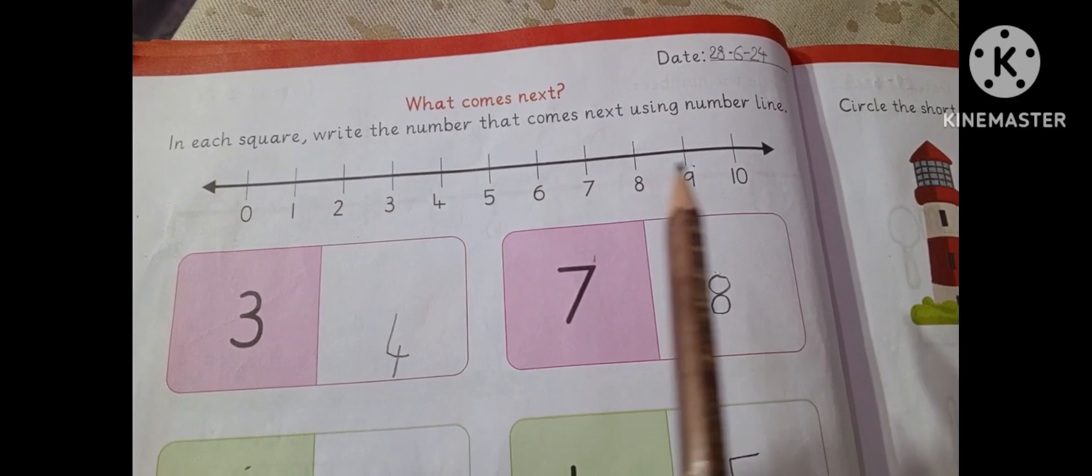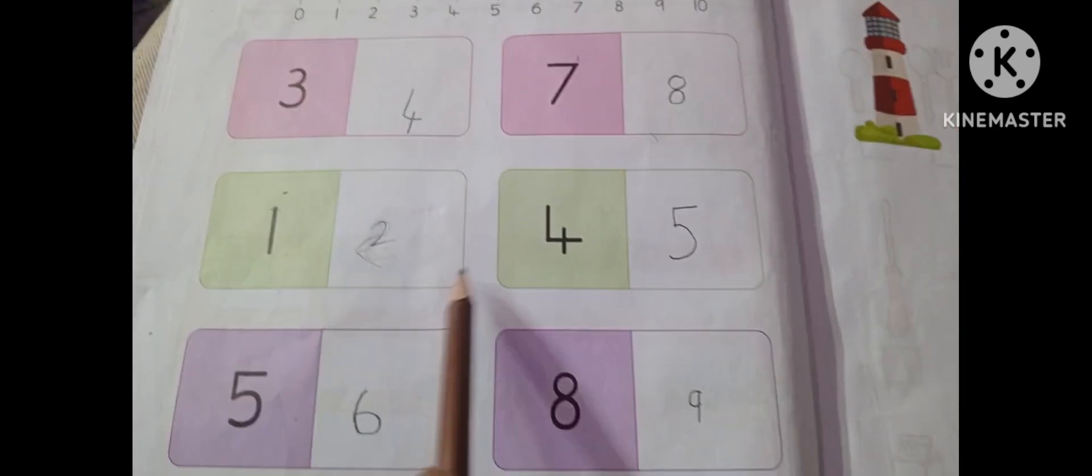In each row write the number that comes next. 3, 4, 7, 8, 1, 2, 4, 5, 6, 8, 9, 2, 3, and 6, 7.